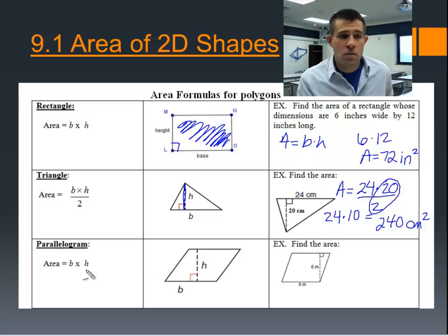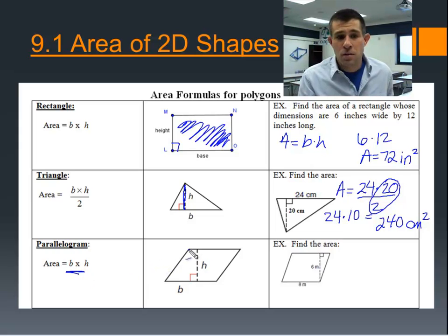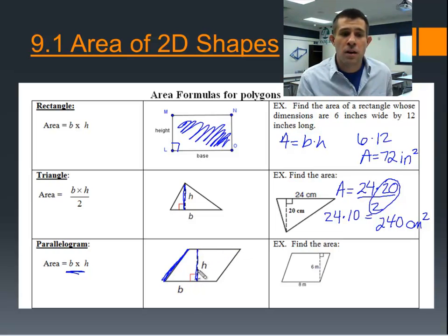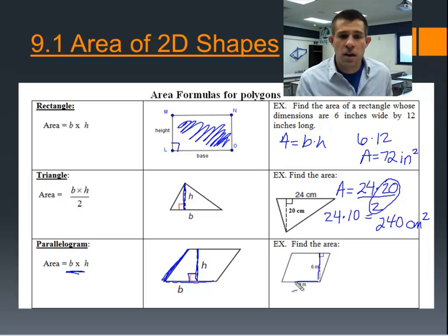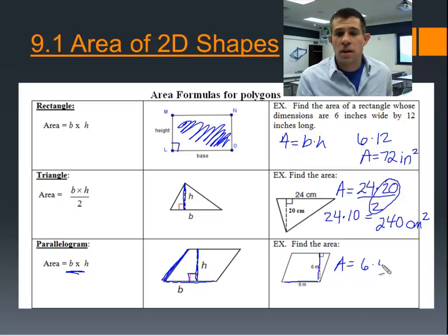Next is the area of a parallelogram, which is also base times height. A common mistake is thinking the diagonal slanted side is the height. Remember, height always needs to be perpendicular to the two parallel sides — it's the distance between those parallel sides, and the base is the full bottom side. In this example, we have a height of 6 and a base of 8. The area is 6 times 8, which equals 48 meters squared.